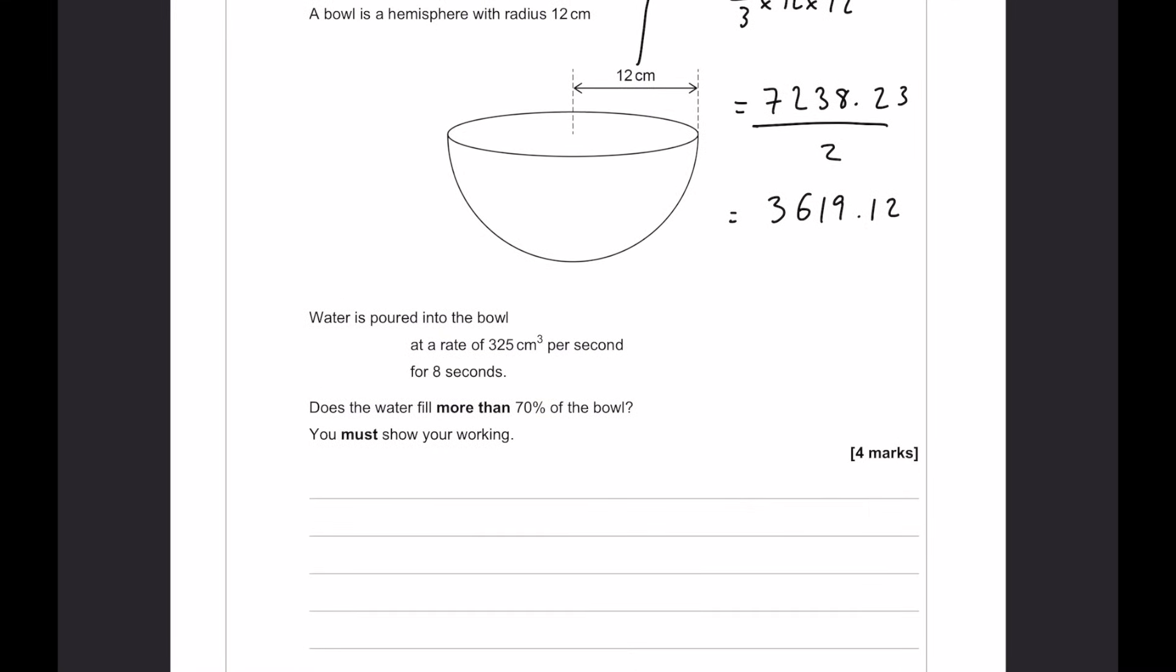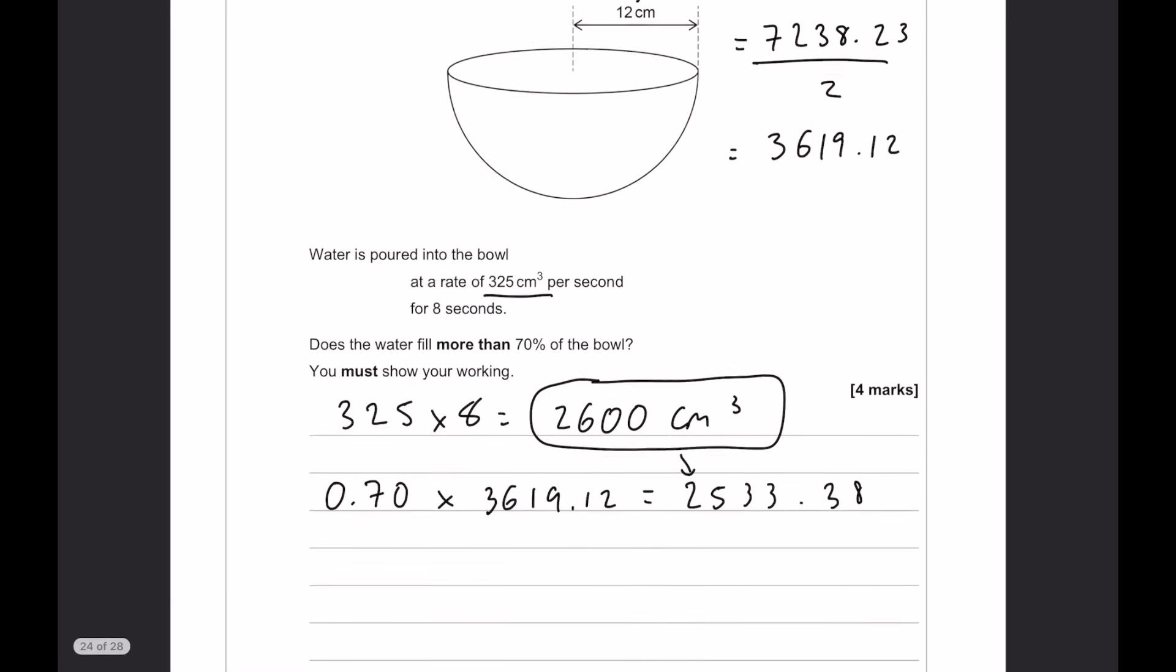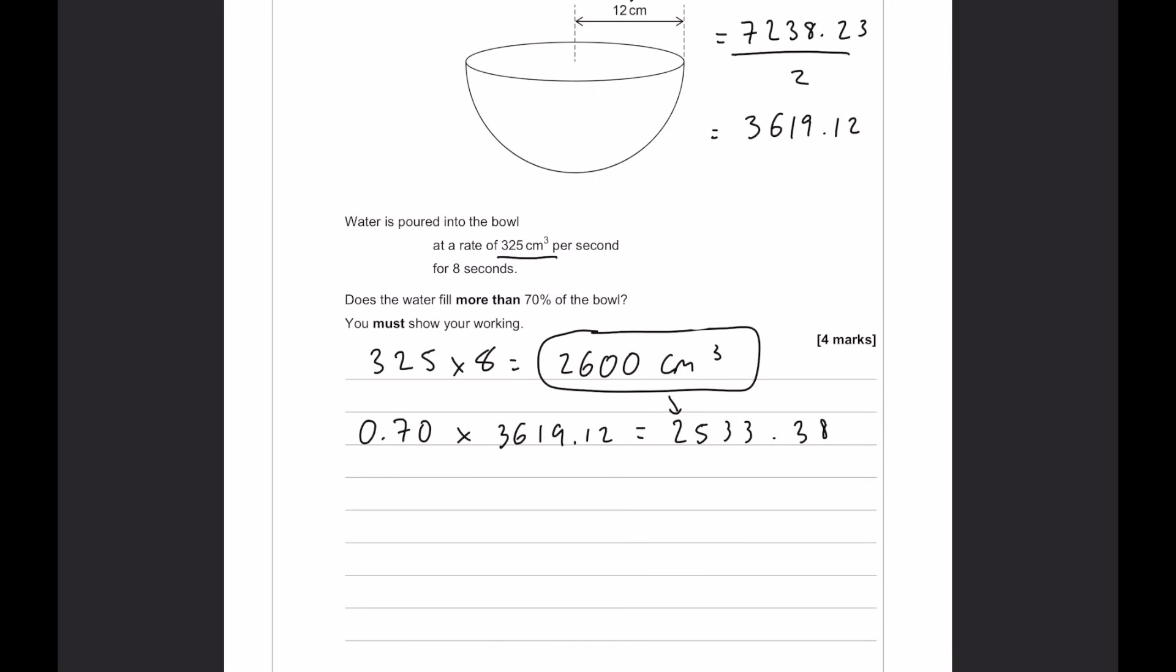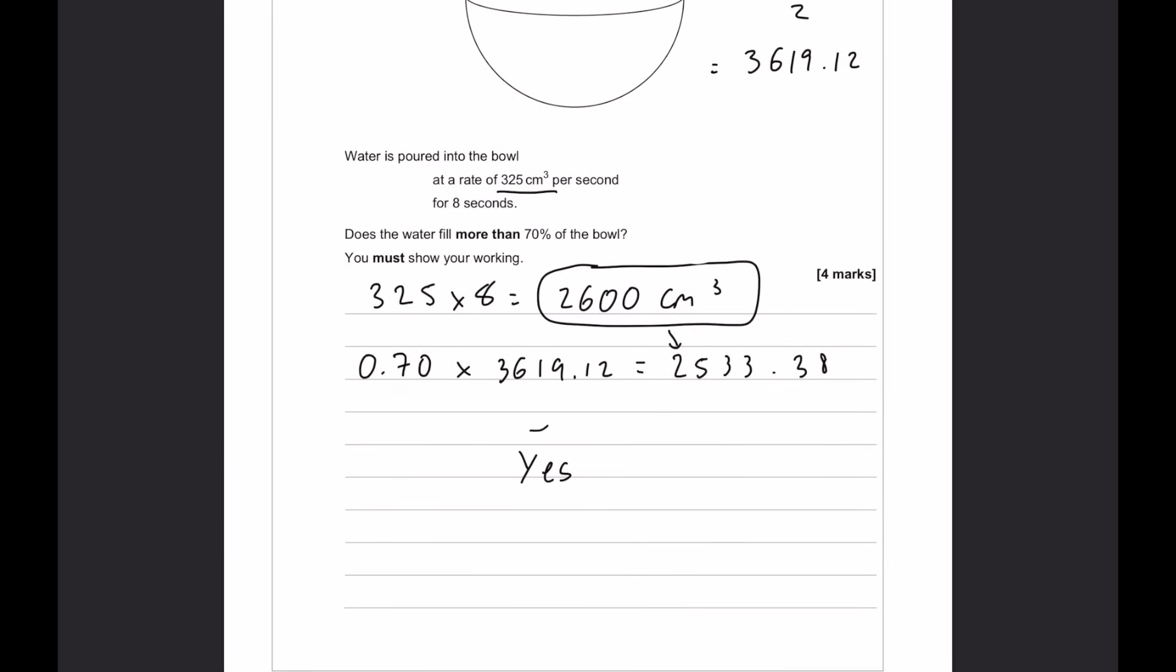So, the rest of it. Water is poured into the bowl at this much per second for 8 seconds. So, we want to know how much water that is. 325 times 8. That is going to be 2600 centimetres cubed. And is that more than 70% of the bowl? Well, let's work out what 70% of the bowl's capacity is, and the way we do that is 0.7 times 3619.12. And that is 2533.38. As you can see, this is more than this. So, this might be something like 73% of the bowl. That is just an estimate. It might not be exactly that. But the short answer is, yes, it does fill more than 70% of the bowl.